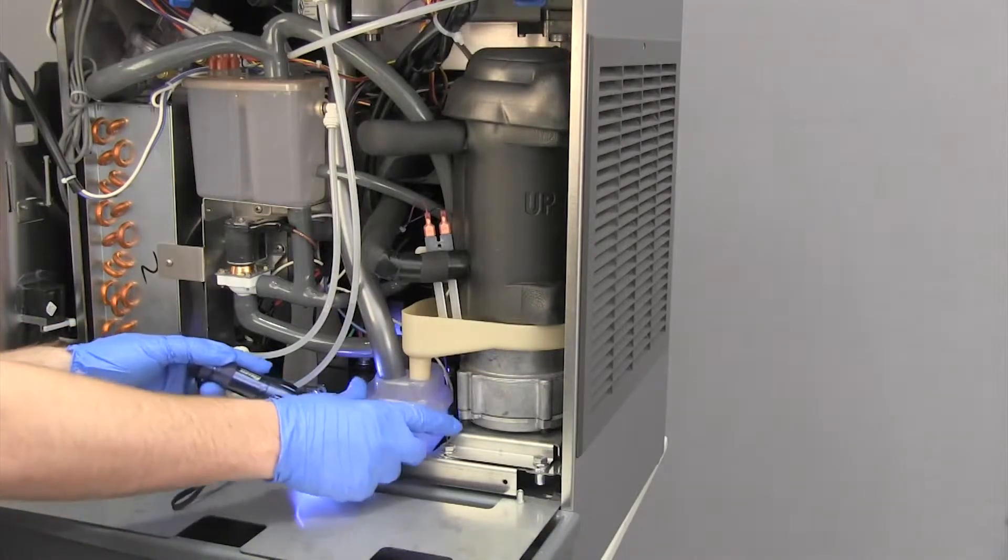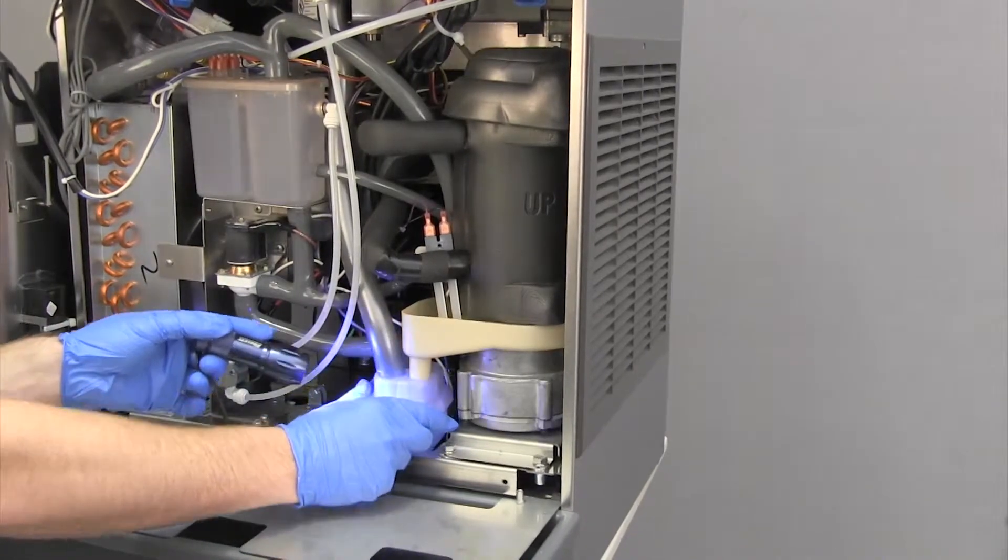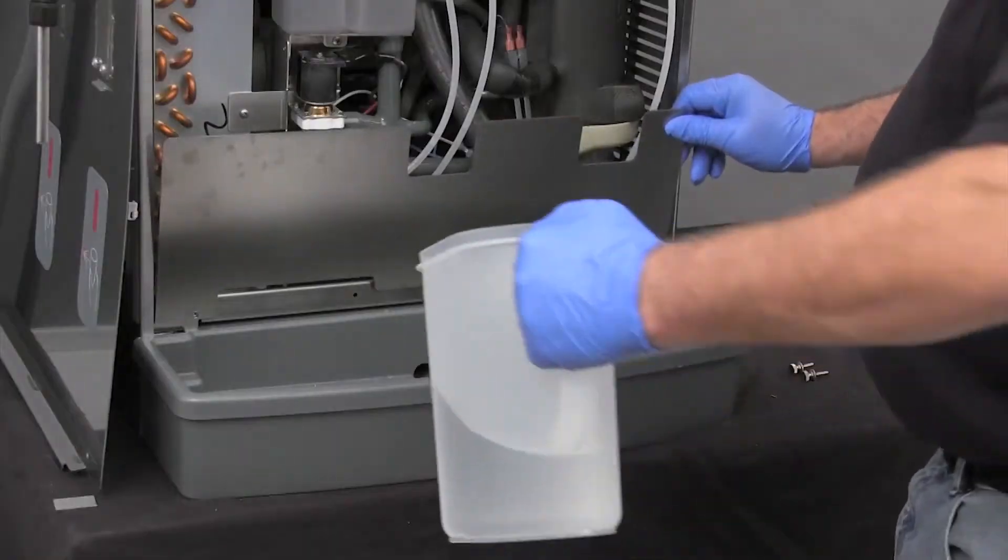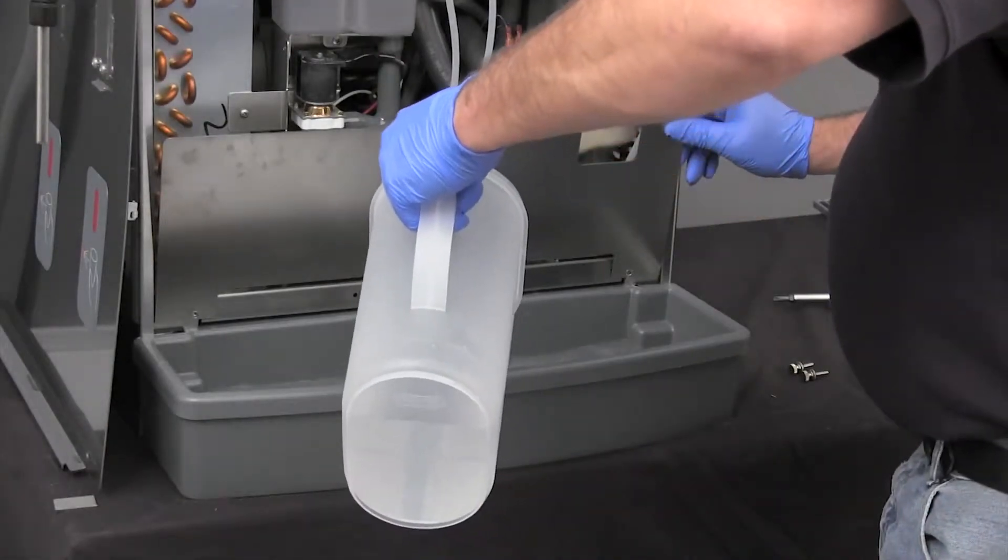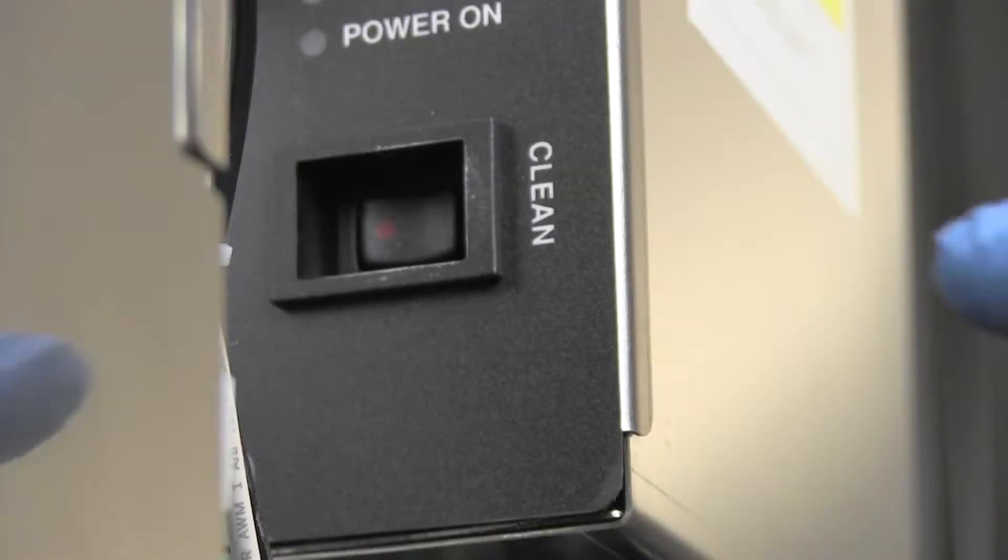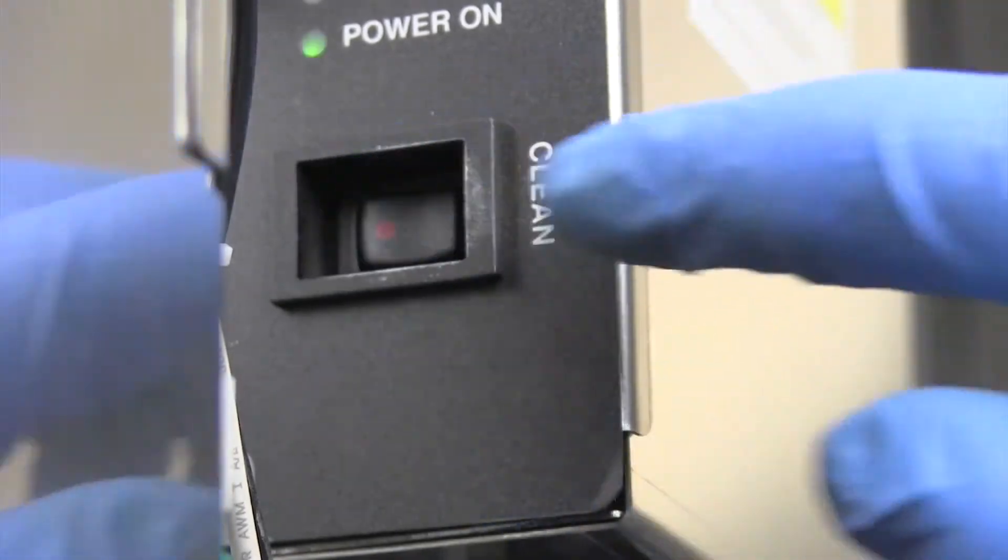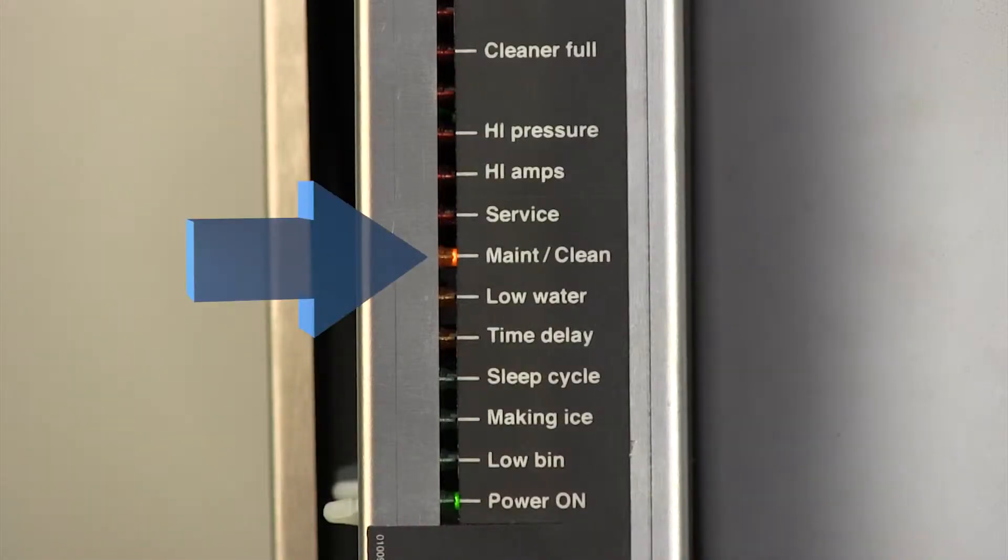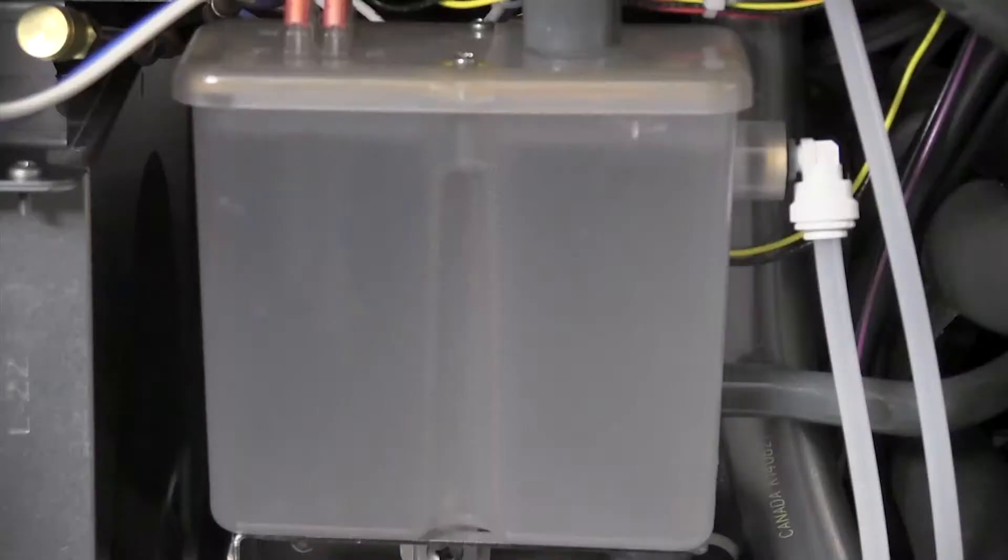Inspect the drain cup and check the drain pan drain line to ensure they are open and water can flow freely. This prevents potential water overflow during the semi-automatic cleaning. Start the semi-automatic cleaning cycle by pressing the clean switch. The maintenance light will come on and the water system drains.